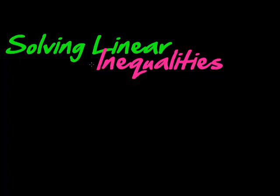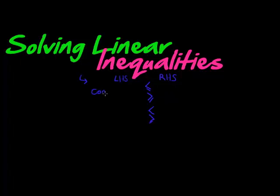So what is a linear inequality? Well, first of all it is an inequality, which means it has a sign like greater than or less than. It can take any one of the inequality signs: smaller than or equal to, greater than or equal to, smaller than, greater than. It has a left-hand side and a right-hand side.